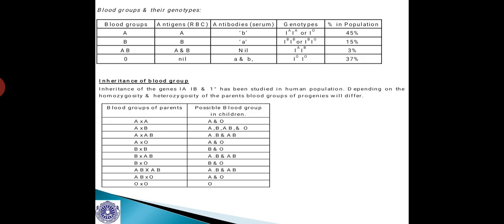It can also be pronounced as IO IO, but it should actually be pronounced as I0 I0 because there are no antigens in it. In all these blood groups we come across one common gene known as I — the letter I — which indicates isoagglutinogen, that means it is a kind of antigen present in common in all human blood groups. Hence it is known as isoagglutinogen.